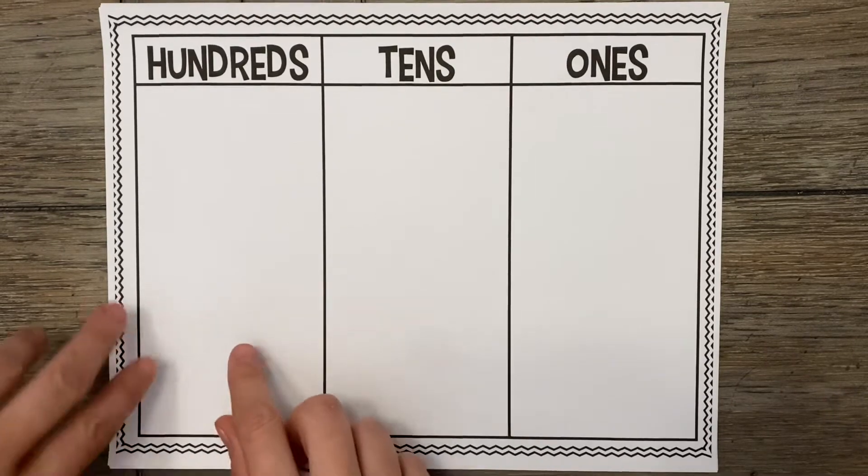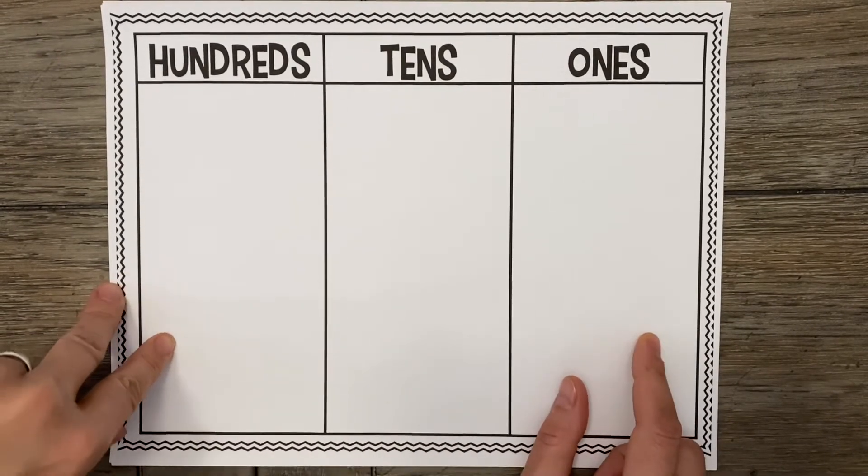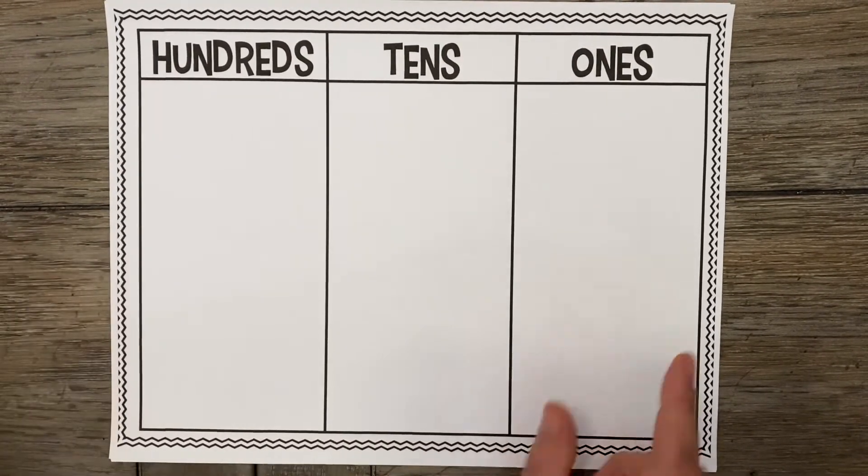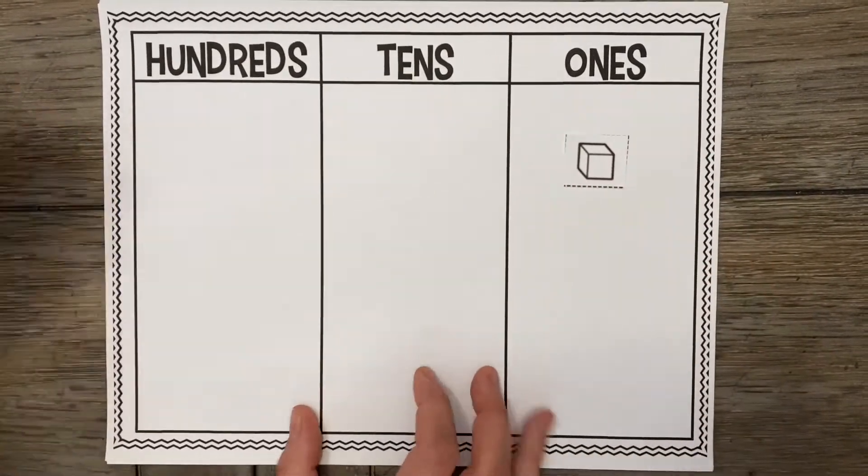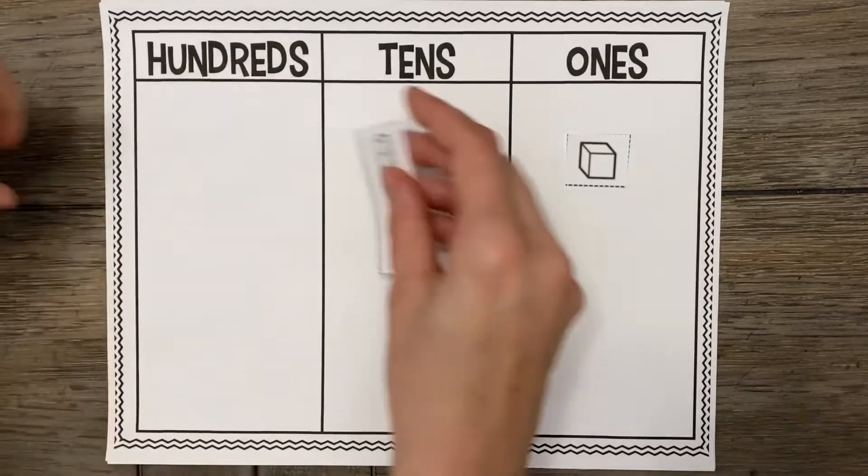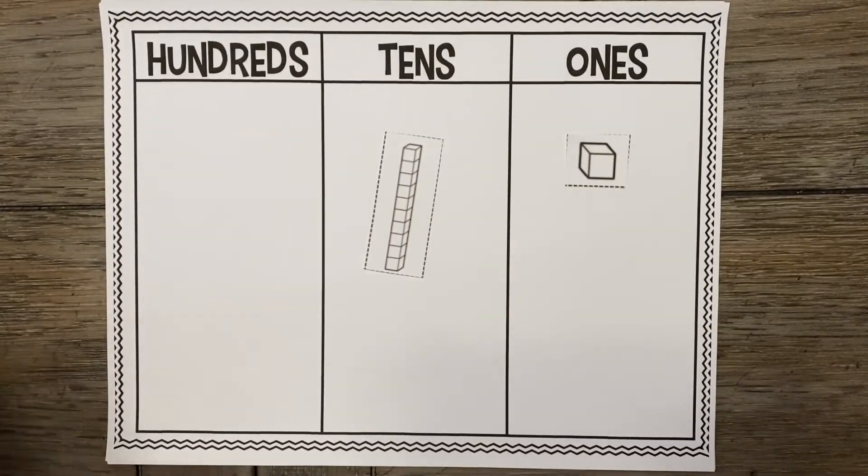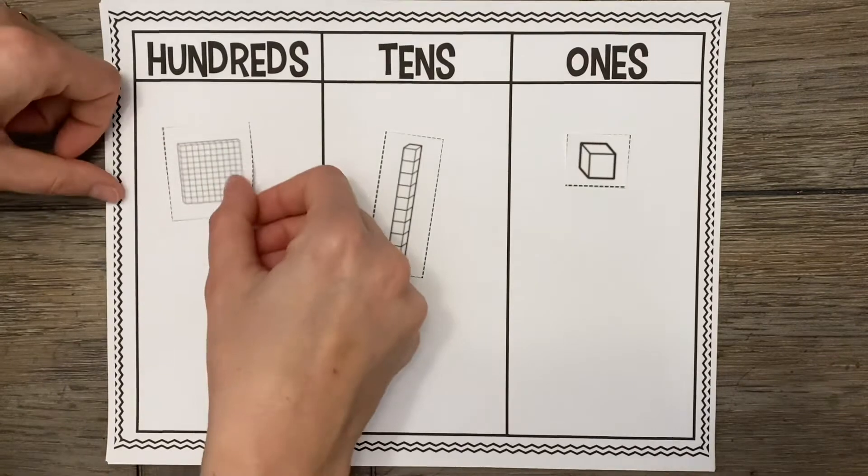So let's take a look. Right here we have our place value chart, which we've used many times before, and you've seen when we've used our little 1 cubes, we've used our 10 rods, and today we are going to introduce a big square to that, and that is our 100s.